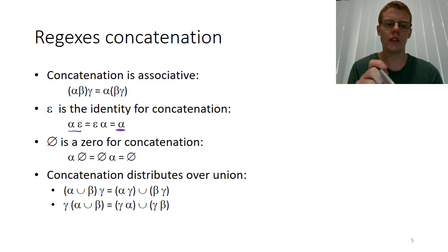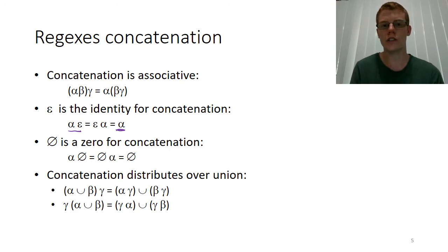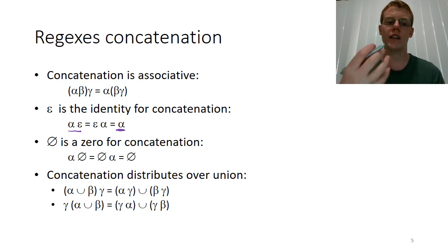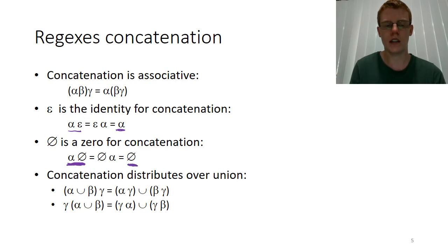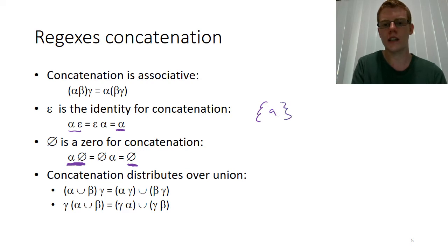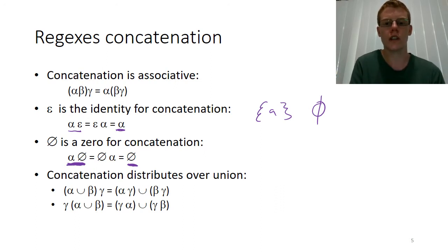Remember that the empty set was the identity for union, meaning union kept the original set. But the empty set is the zero for concatenation — when we concatenate a regex with the empty set, we end up with the empty set. This makes sense: if I have a set and try to concatenate it with every member of the empty set, the empty set has no members, so there are no pairwise results. The result of concatenating those two languages is just the empty set.